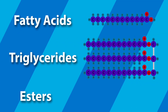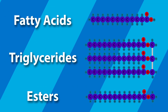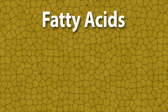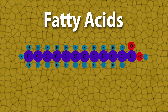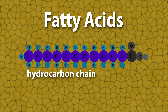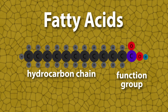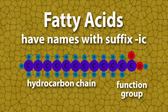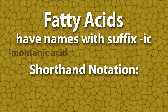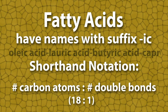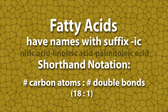Biodiesel chemistry involves fatty acids, triglycerides, and esters. Fatty acids have the structure shown here — they have a hydrocarbon chain and a functional group. They are named with the suffix '-ic' and written in this shorthand notation.